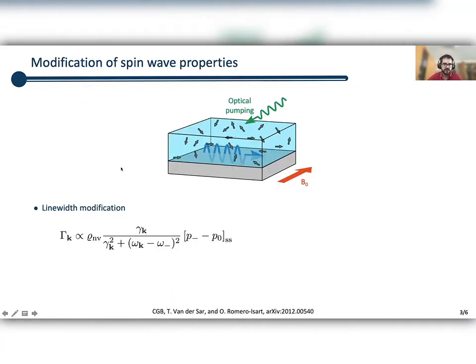Let me focus on this Γₖ to show you how it looks like. The relevant dependencies for this linewidth shift of the spin wave mode with vector k has three important dependencies: the first one is the density of NV centers in this ensemble, the second one is a Lorentzian resonance condition which tells you that the spin waves that will be affected more by this ensemble of two level systems are the spin waves which are resonant to these two level systems, and then you have an occupation factor which is basically the difference between the occupation of the excited state of these two level systems and the ground state of these two level systems in the steady state.